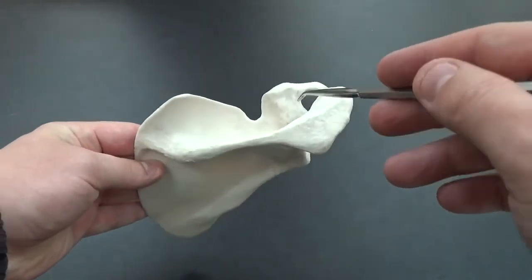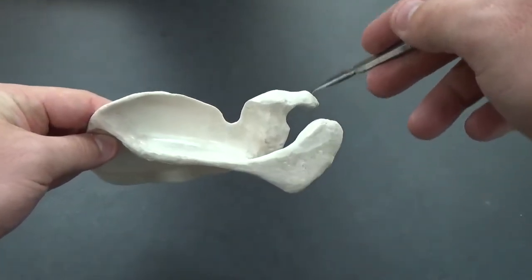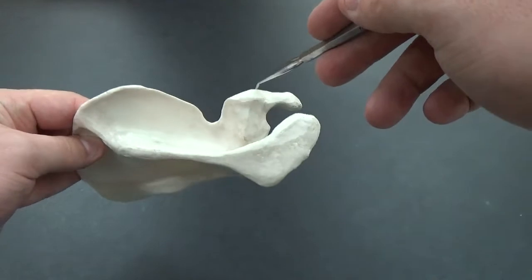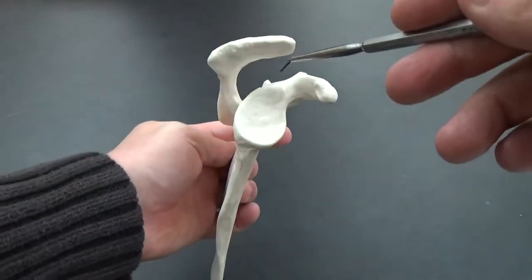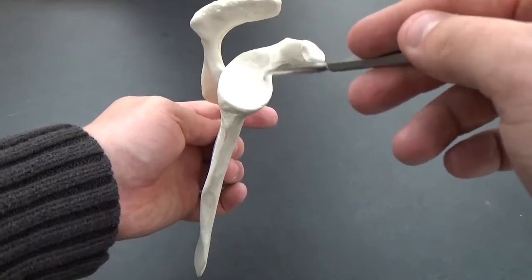You can see it has two processes that sit here on the top, the acromial process and the coracoid process. Then you have the glenoid cavity, which is where the head of the humerus is going to articulate with the scapula.